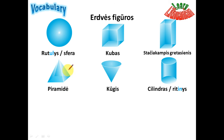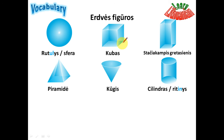Piramidė — pyramid. Kūgis — cone. Cilindras — cylinder. Ritinys — and 'ritinys' is made from the word 'ristis' — a reflexive verb meaning to roll, like 'ristis nuo kalno' — to roll down from the mountain. So: rutulys or sfera is a sphere, kubas is a cube, stačiakampis gretasienis is a rectangular cuboid, piramidė is a pyramid, kūgis is a cone, and cilindras is a cylinder. These were the main shapes.